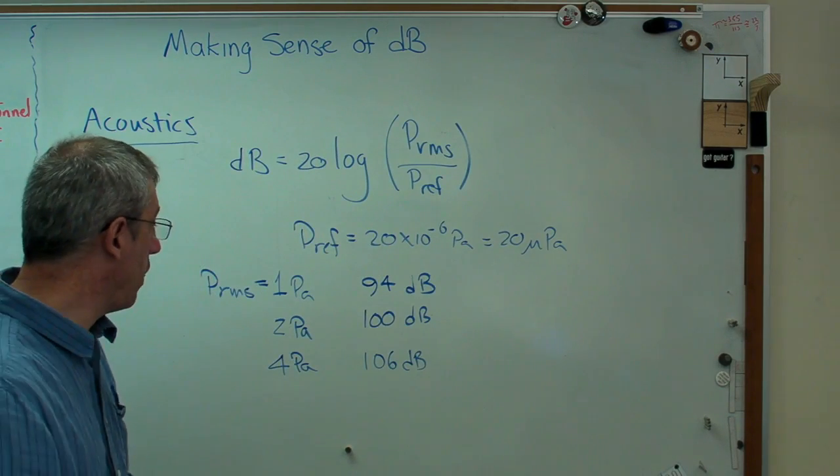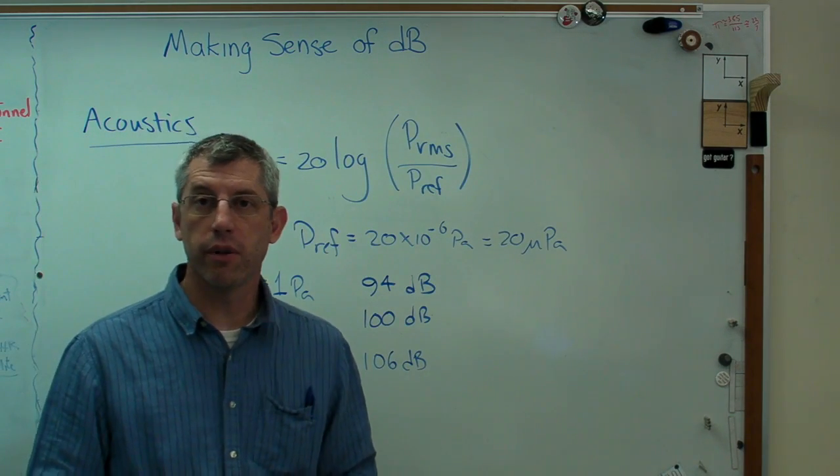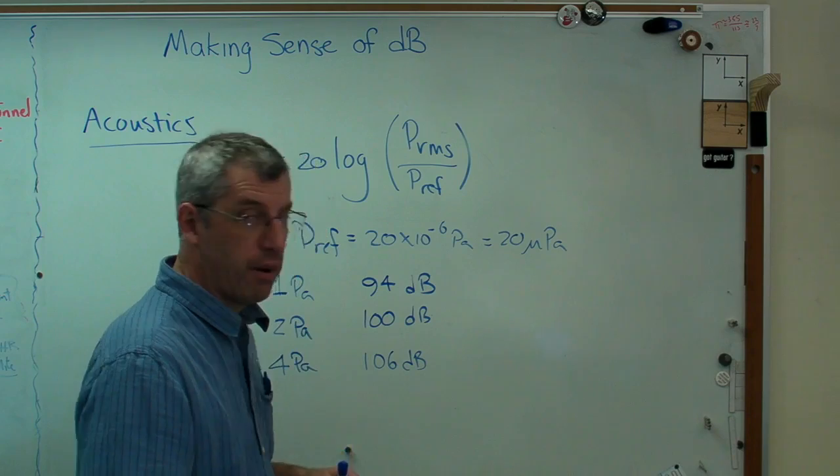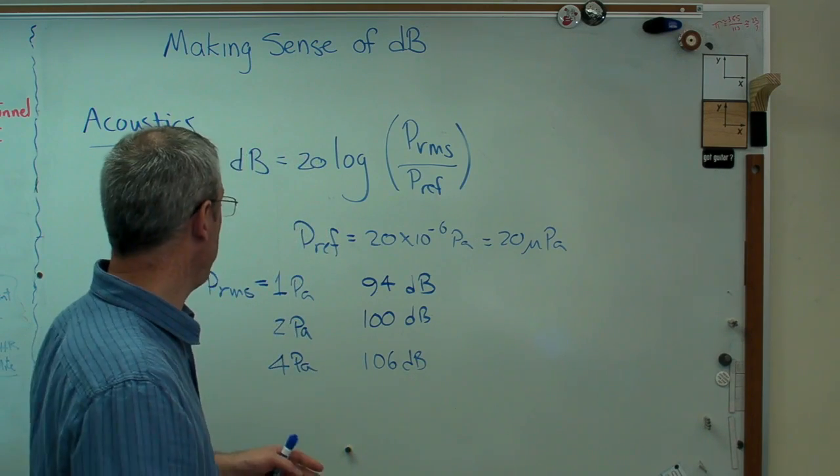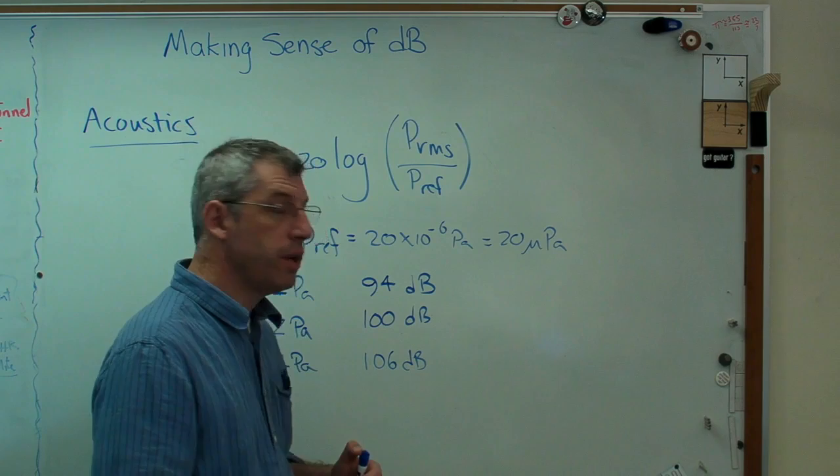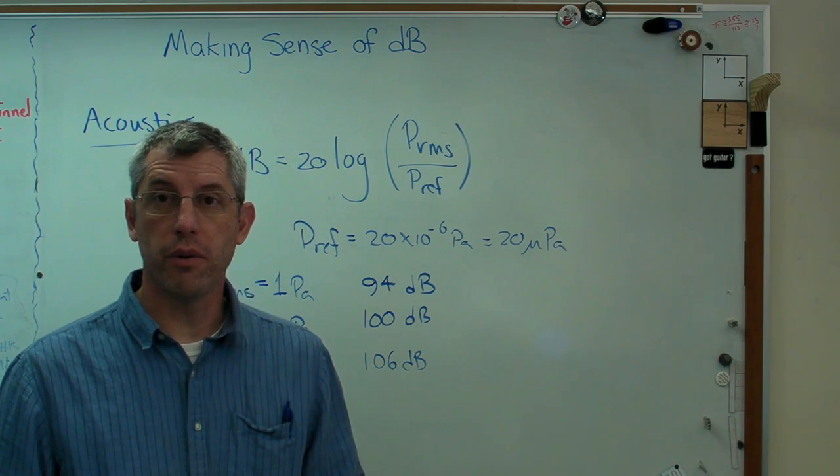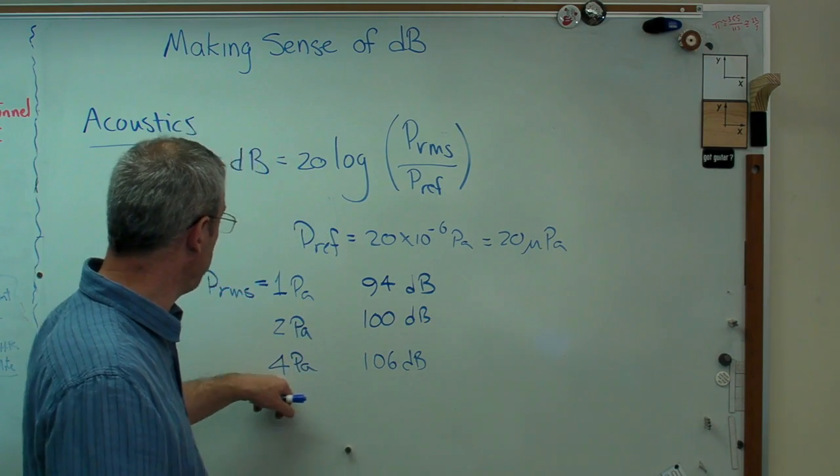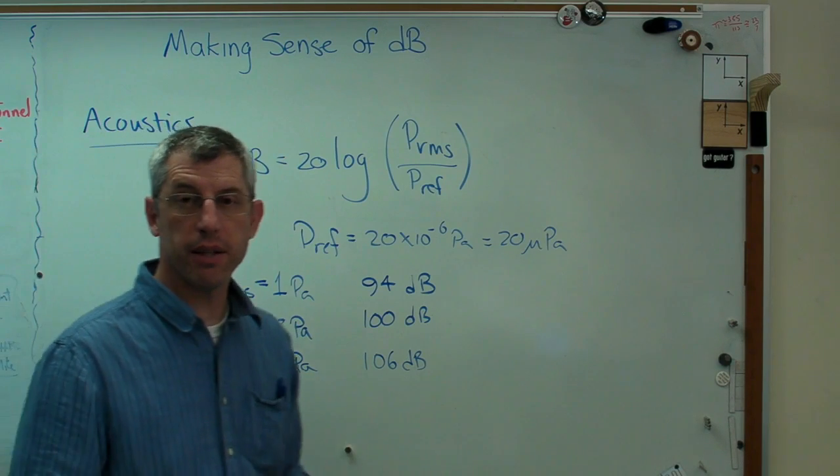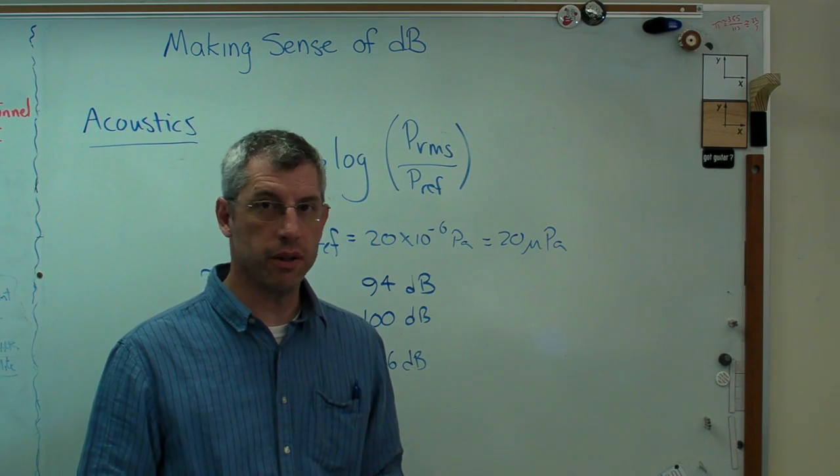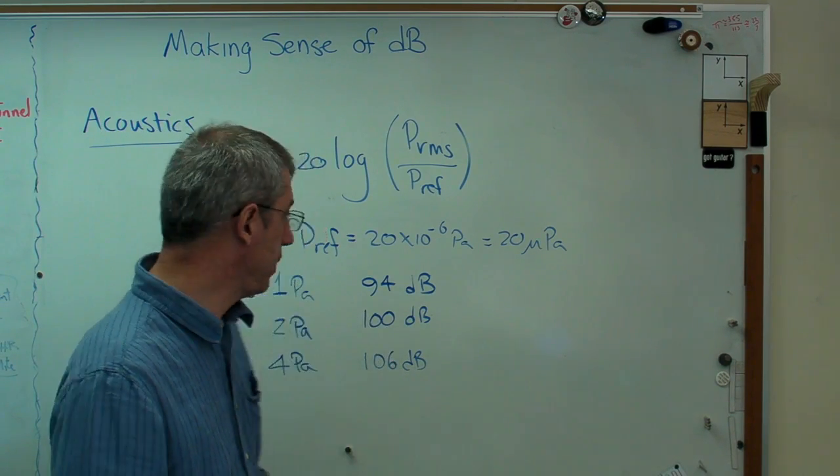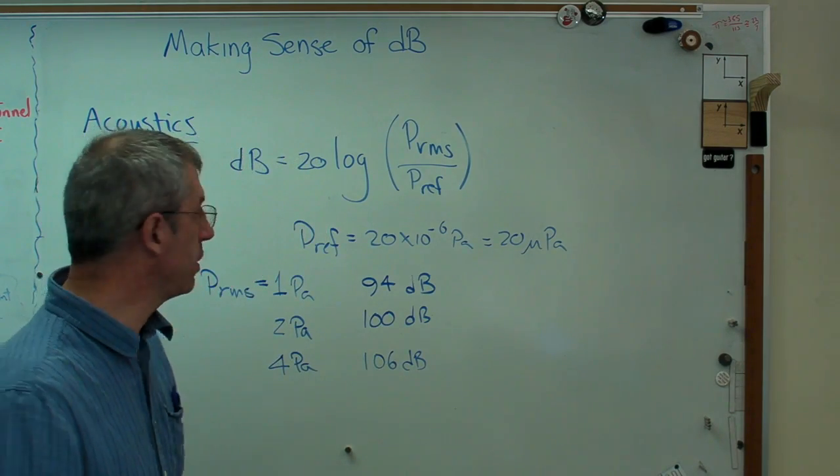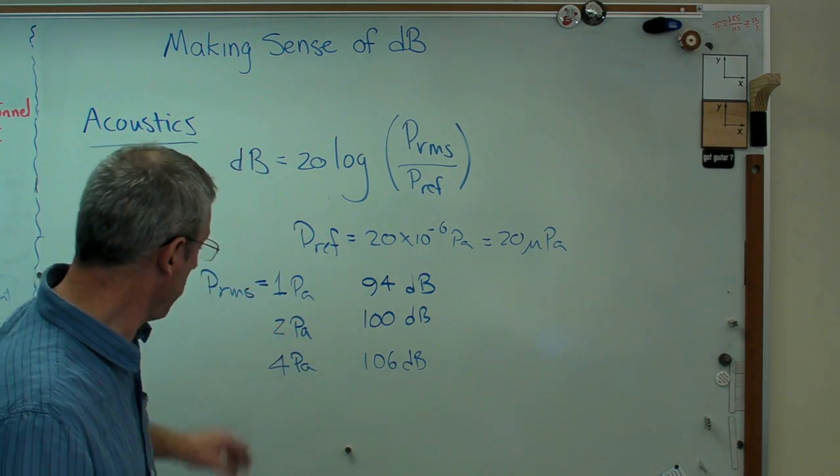So when somebody says, oh, I was at the front row of a rock concert, The Who or somebody, the loudest band in the history of the universe, and it was maybe 112 dB in the front row, that's deafening. That's up to 8 pascals. If it was 8 pascals RMS in this room right now, I couldn't stand to be in here. That would be just way more than any person should be expected to stand. So that's how it works in acoustics.